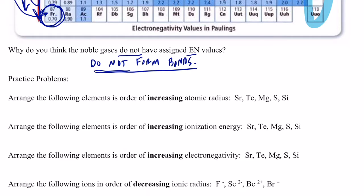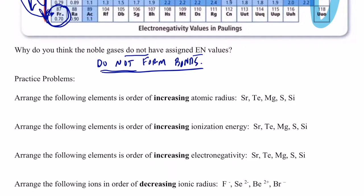Let's wrap up this section on periodic properties with a few practice questions. We'll need our periodic tables. Take a few minutes and see if you can answer these four questions. We're going to arrange atoms in order of increasing radius, increasing ionization energy, increasing electronegativity, and decreasing ionic radius. Try them by yourselves and then tune back in to see how you did.